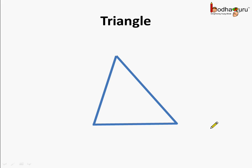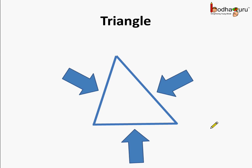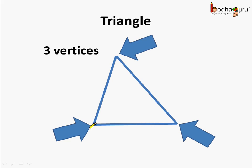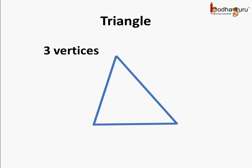So now we know a triangle is a three-sided closed figure. It has three sides. Also, a triangle has three corners or three vertices. These are the three corners or vertices of the triangle. Now let us name the three vertices of the triangle as A, B, and C. So in this triangle, A, B, C are the three vertices.